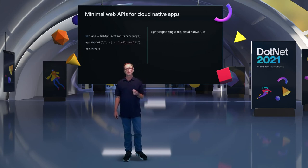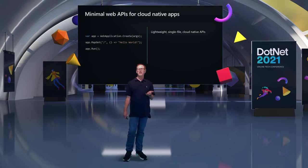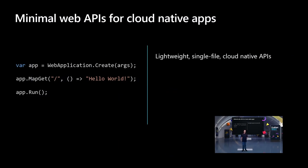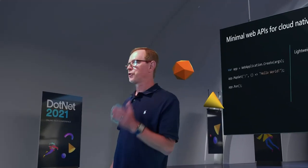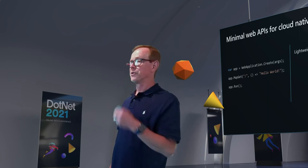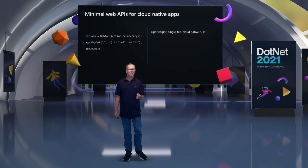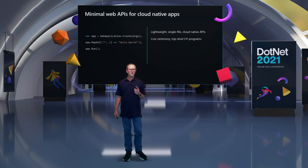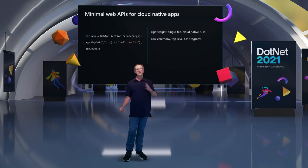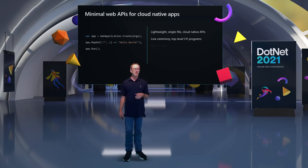Minimal Web APIs: if you built an API with ASP.NET Web API, you've got a program.cs, a startup.cs, and a controller folder. This new approach is an entire application that can return a request in three lines of code — lightweight, single file. It uses top-level programs and other new tech to get rid of all the ceremony you normally see. And if you want, you can always move the same API back to MVC.